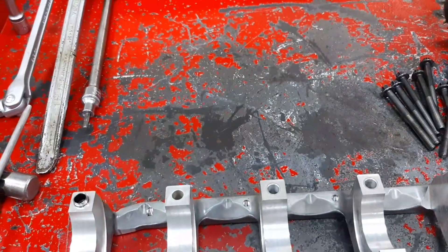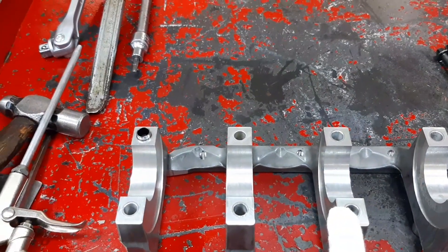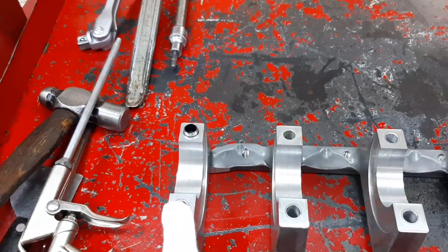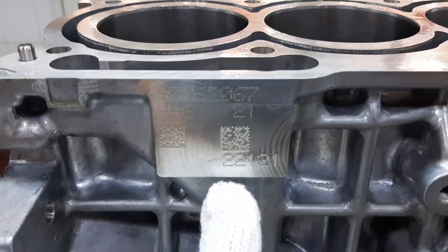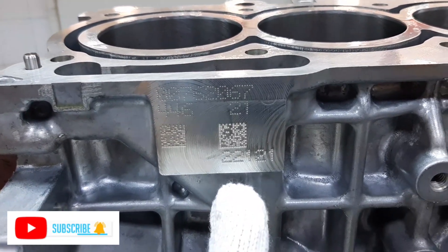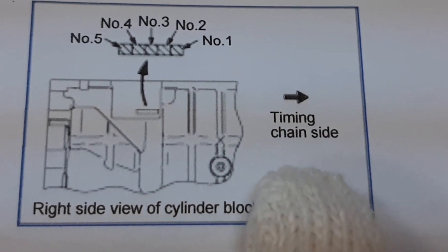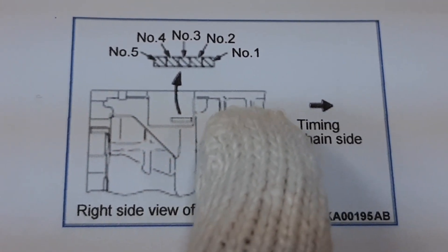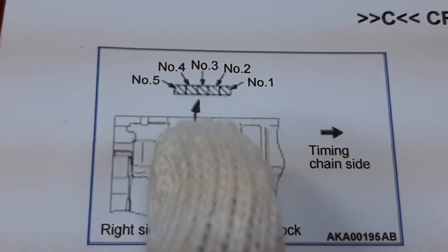We have the bearing caps here, so we have five bearings for our lower crankshaft bearing. The number here indicates the bearing selection. In this illustration, the timing chain side is first — number one indicates crankshaft main journal number one, then number two, number three, number four, and number five.